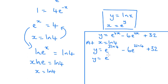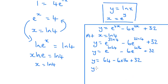At x equals natural log of 4, that's the same as e to the natural log of 4 cubed, which is 64, minus 6e to the natural log of 4 squared, so 16 plus 32. And e to the natural log of 64 is 64. e to the natural log of 16 is 16, so we've got minus 6 times 16 plus 32, and that is 64 minus 96 plus 32, which gives us 0.